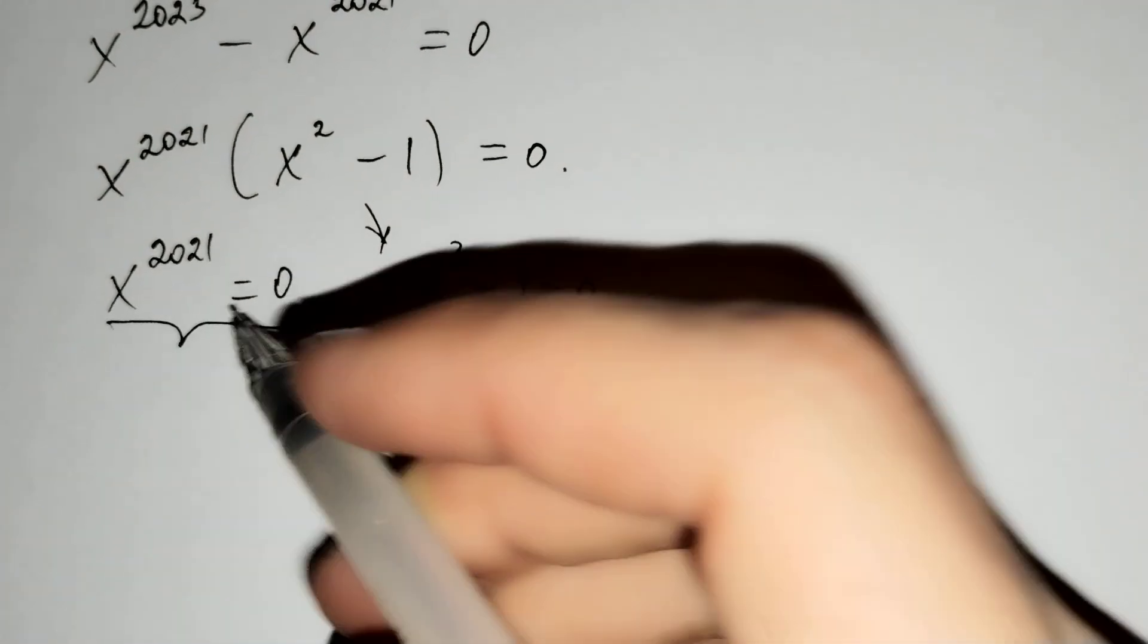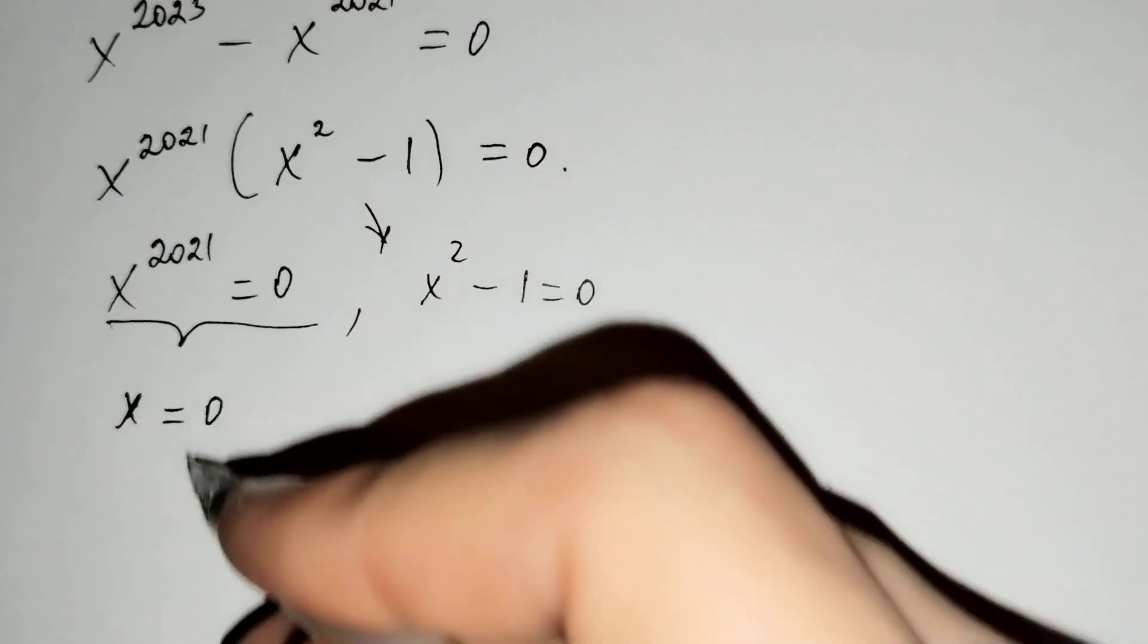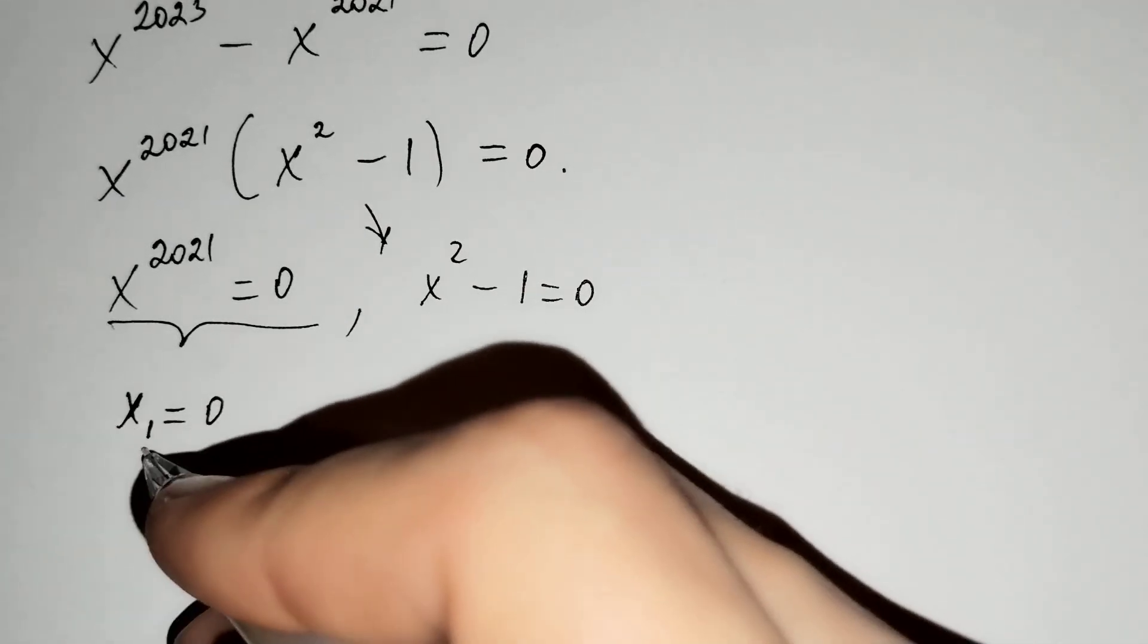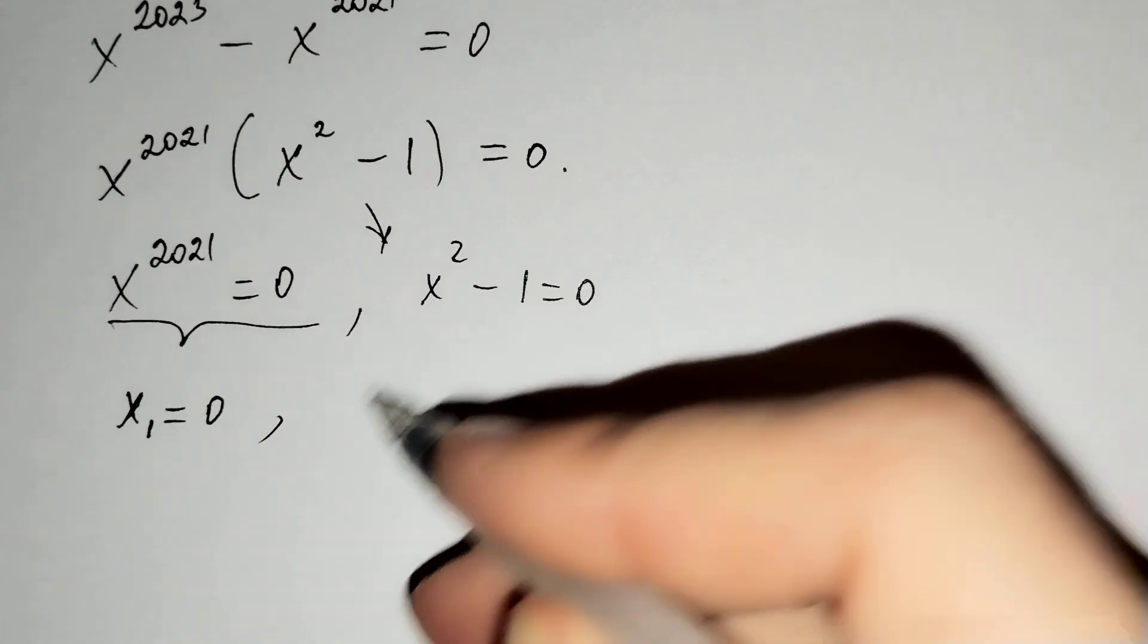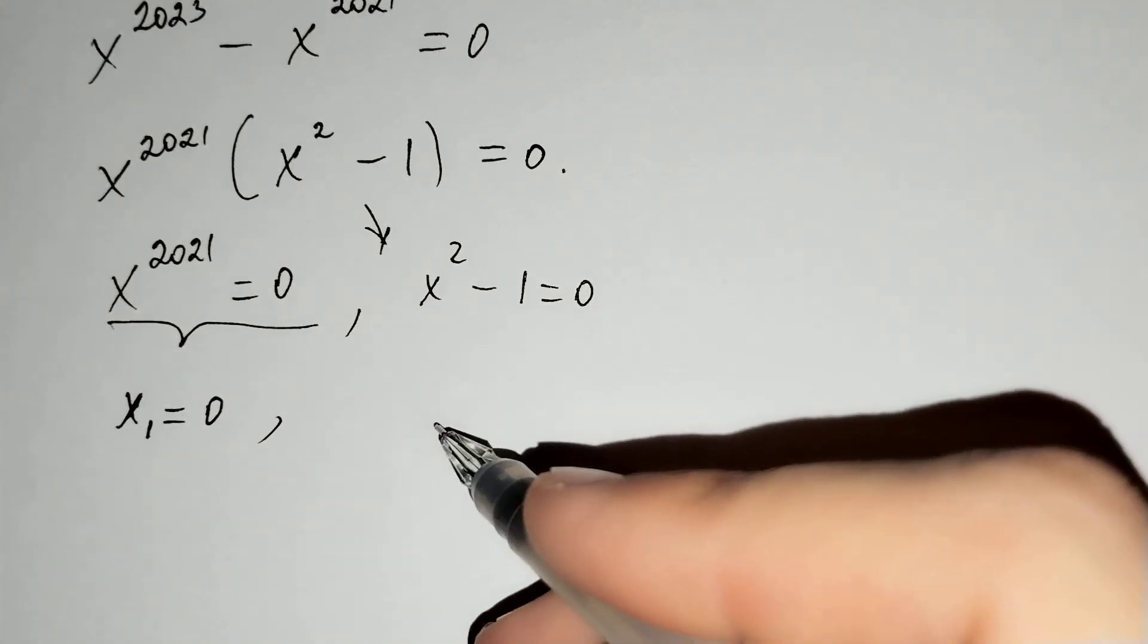From here, x should equal to 0. This is the first solution: x1 equals to 0. And then x squared minus 1 equals to 0.